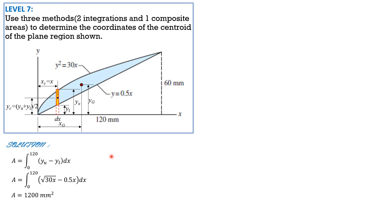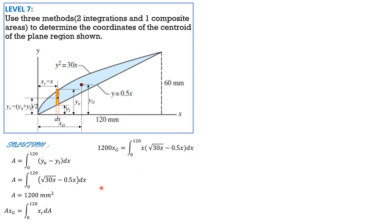For x_G, we use Varignon's theorem: area times x_G equals the integral of x sub c dA. So 1,200 x_G equals the integral of x times (√(30x) minus 0.5x) DX from 0 to 120. Using the calculator, the value of the right side is 57,600. So x_G equals 48.00 mm.